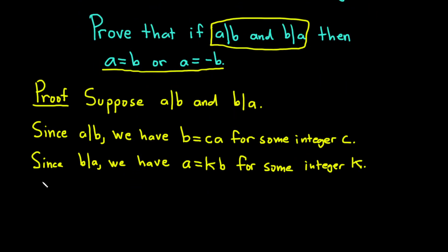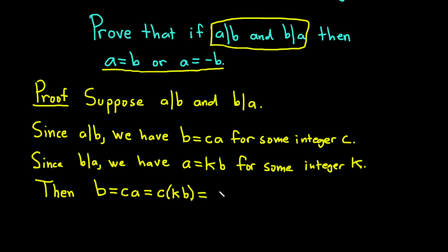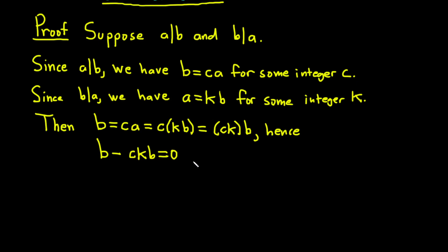Now we have to use these equations to show that a equals b or a equals negative b. Consider what b is: b equals ca. But we know a equals kb, so b equals c(kb). By associativity of multiplication, this equals ck times b. Subtracting ckb from both sides gives b minus ckb equals zero, and factoring out b gives b(1 minus ck) equals zero.